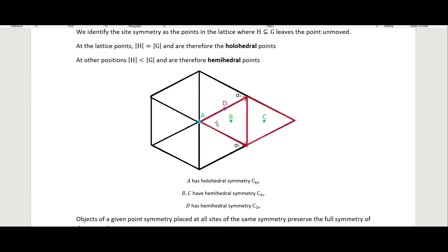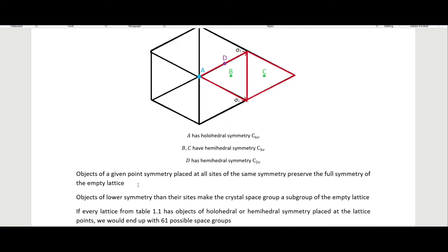This makes sense geometrically: at point a we can rotate to six equivalent positions, so we have a C6 rotation. If we are at b, to superimpose the lattice on itself we move a corner to another corner, giving us C3. For point d, rotating around d moves that point to position a, which is a C2 rotation axis. So placing things at these different positions gives us hemihedral points.